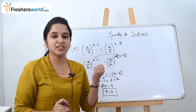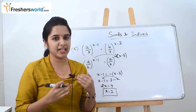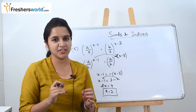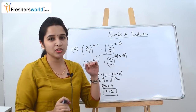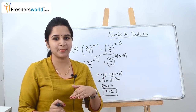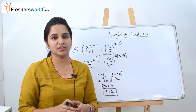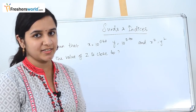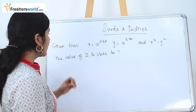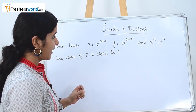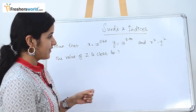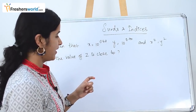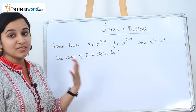These are the basic sums in Surds and Indices. The reason we solved these sums is to show that you should understand the concept — you don't have to memorize each formula. Once you know when to add and when to subtract, it will be very easy to solve. The next question: given that x is equal to 10 power 0.48 and y is equal to 10 power 0.70, and x power z is equal to y square, find the value of z.